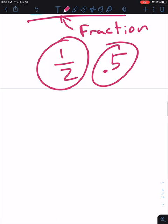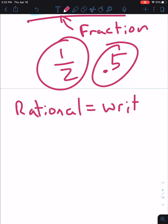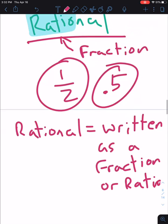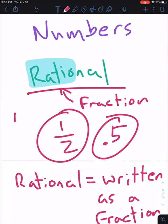All right, just so you understand. Rational means it can be written as a fraction or ratio. So the ratio of one half might look like one to two.